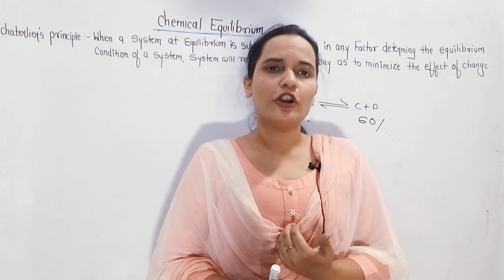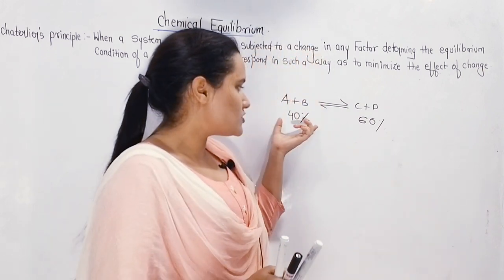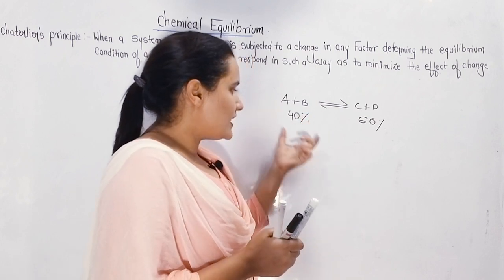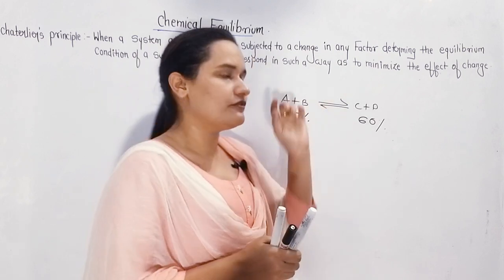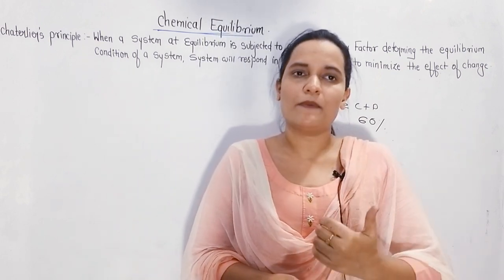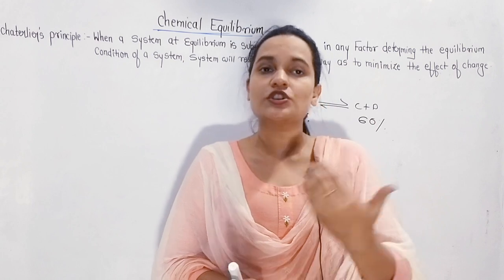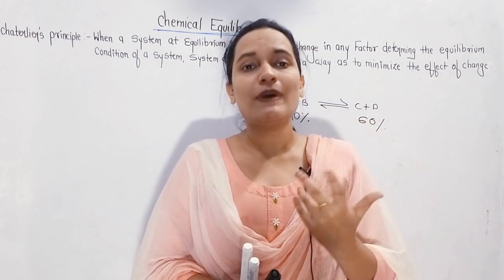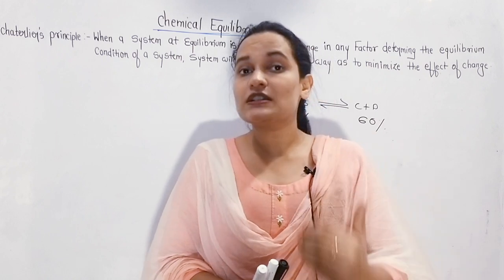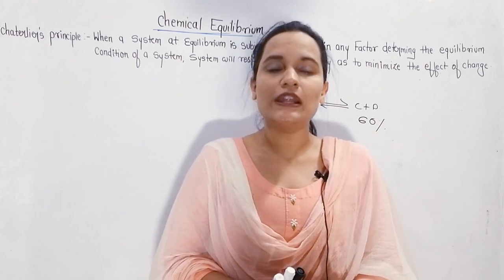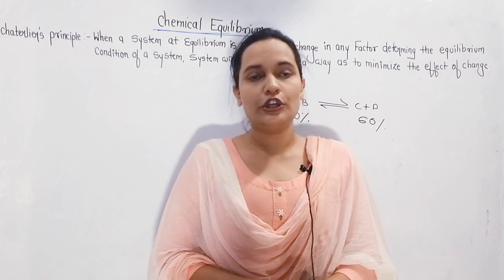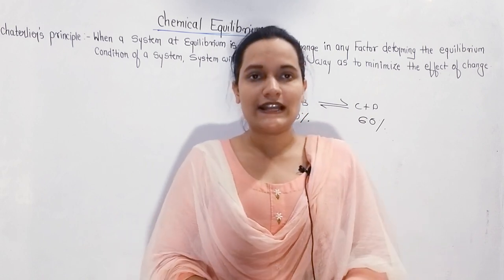But what I want is — I don't want my reactant to remain at 40%. I want more reactant to convert into product. So if I want to shift my equilibrium position, how can I shift my equilibrium? What are the factors that can shift my equilibrium position? That is what we are going to see today in today's lecture.